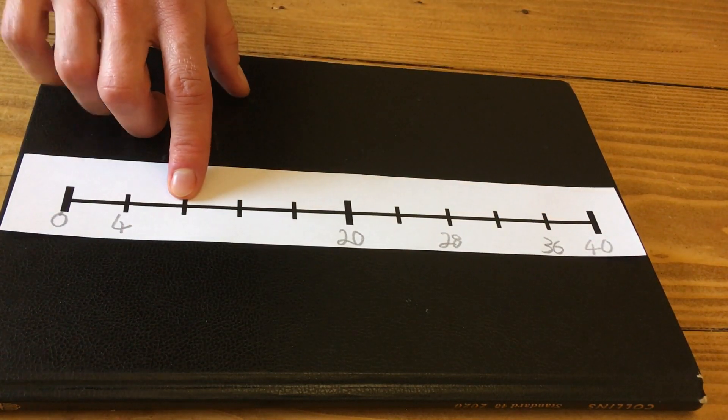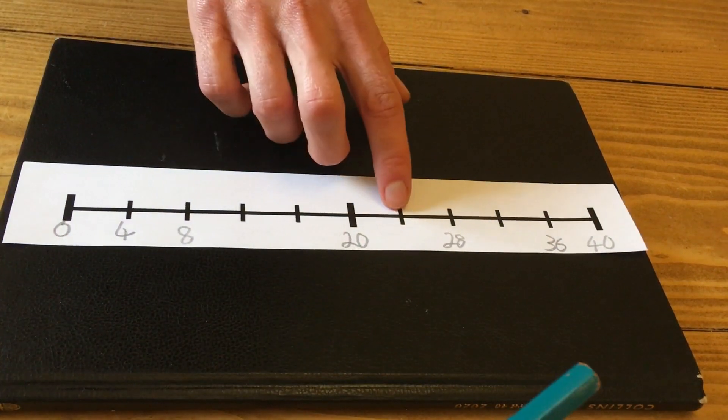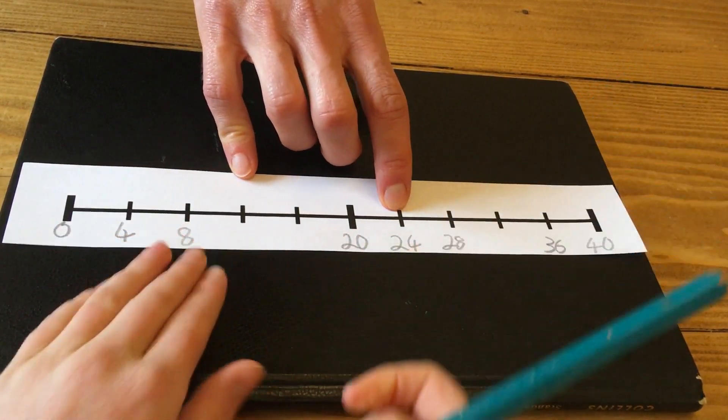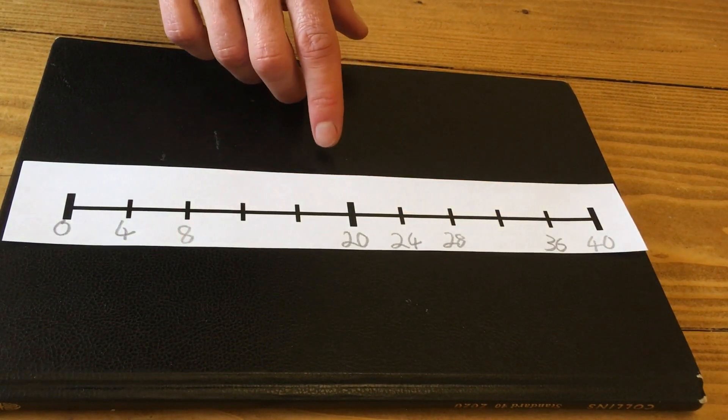This one? That is double four, which is eight. Let's go to this one. That one's twenty-four. How do you work it out? Because it's four more than twenty.